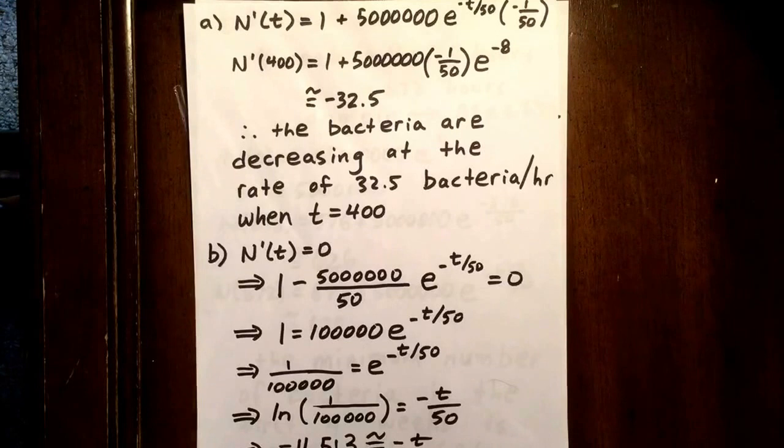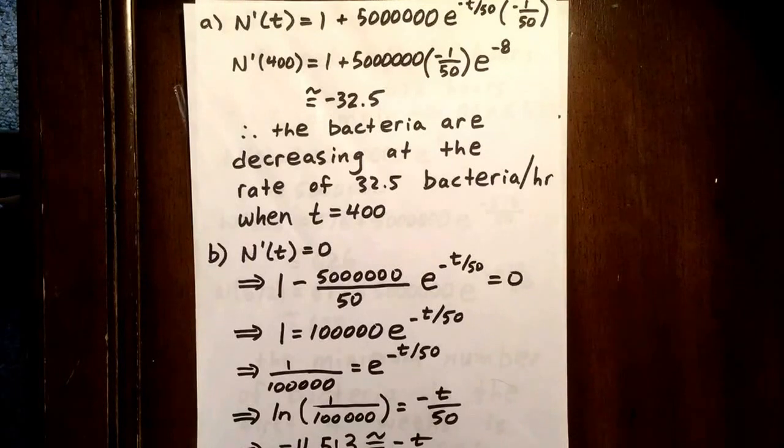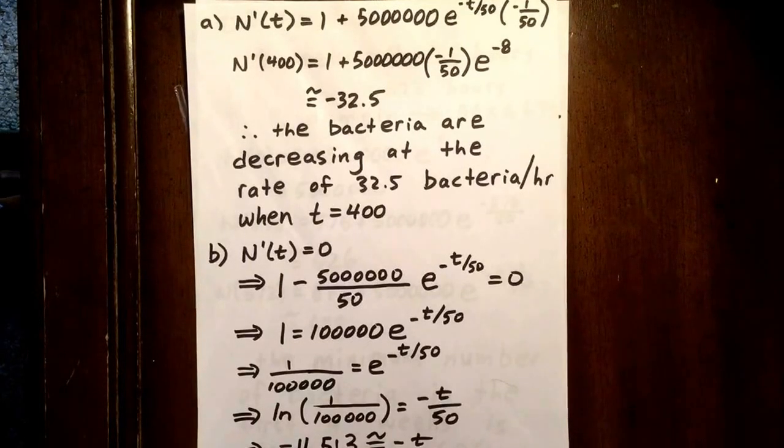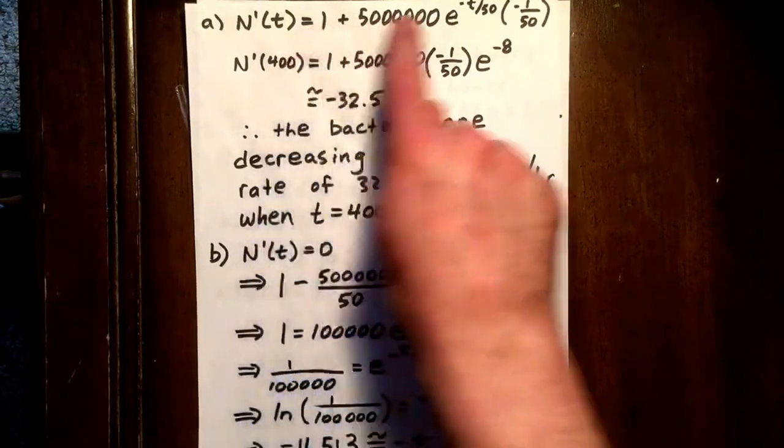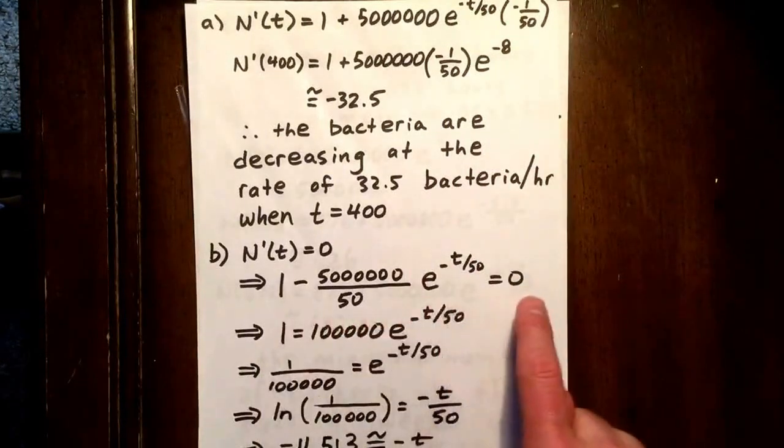Now the next thing we want to do is we want to let N prime at t equals 0 for part b, because we're going to try to determine when the minimum amount of bacteria is. So this is an optimization problem. So we're going to take this derivative right here and we're going to set it equal to 0.